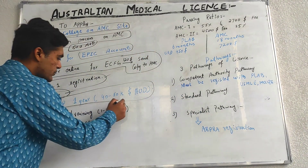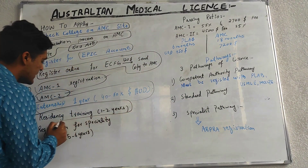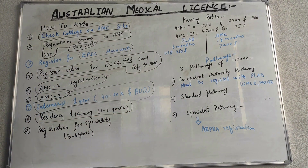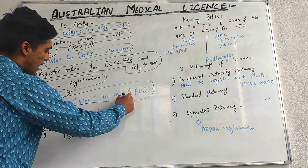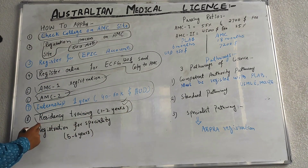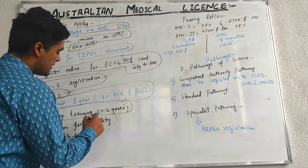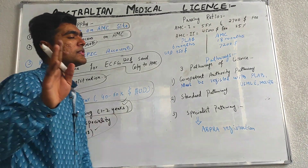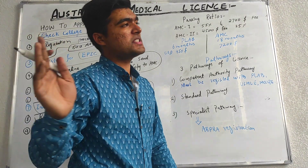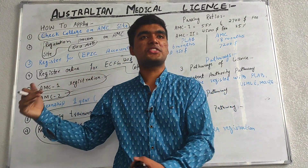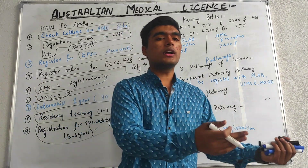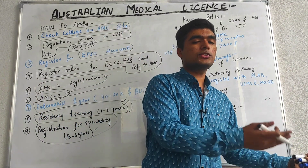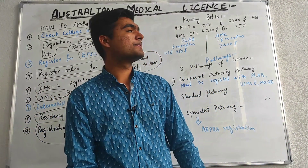After completing the house job, you apply for a residency training program, which takes about one to two years. After residency, you apply for specialty training, which takes approximately three to five years depending on the specialty you choose.